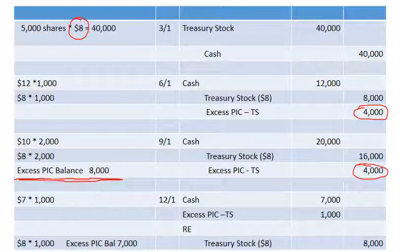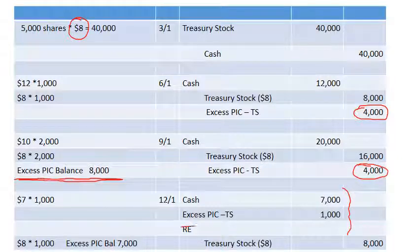Tracking the treasury stock units: I started with 5,000, sold 1,000, then 2,000, then 1,000 — so I still have 1,000 shares of treasury stock remaining. It's possible I could sell those at a low enough price to require taking money from retained earnings. I generally set up the journal entry for the worst-case scenario, and if I don't need the retained earnings account, I just cross it out.